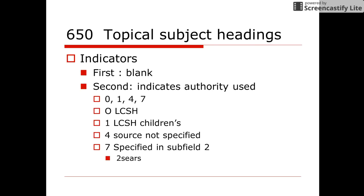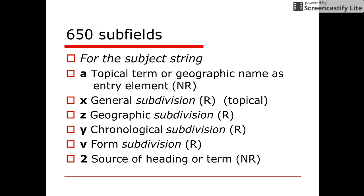The 650 tag uses a blank indicator in the first position and then uses 0, 1, 4, or 7 in the second position, most commonly found in school library collections. Check for database errors in this tag, or check to make sure the 7 is accompanied by a 2. Some examples of the 650 subfields include the subject string, topical terms, general subdivision, geographic, chronological form, and the source.